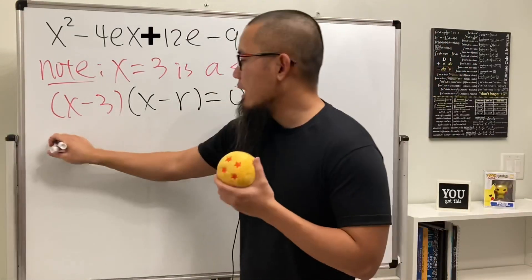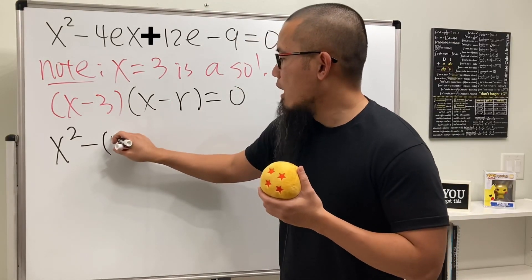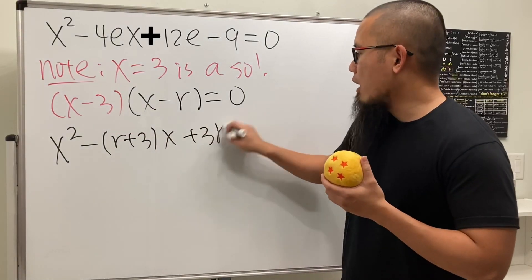And multiply this out, we get x squared and then we get minus rx and then minus 3x, which is minus parentheses r plus 3 and then x. And then in the end here, we have plus 3r. This is equal to 0.